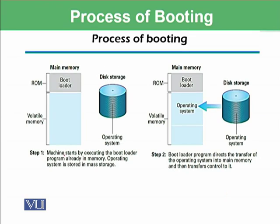Here is the process of booting. In the first step, the machine starts by executing the bootloader — a program that initiates the booting process. This bootloader is available in the ROM slot of main memory, which is non-volatile memory, while the operating system is stored in mass storage. In step two, the bootloader program directs the transfer of the operating system into the main memory and then transfers control to it, migrating the OS instructions from mass storage to main memory so the operating system can start its functionality.